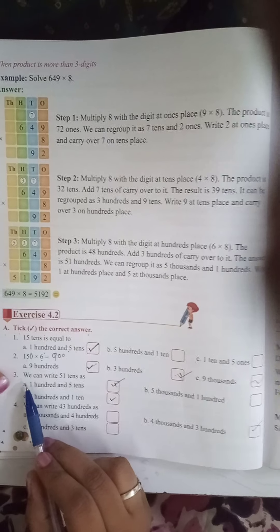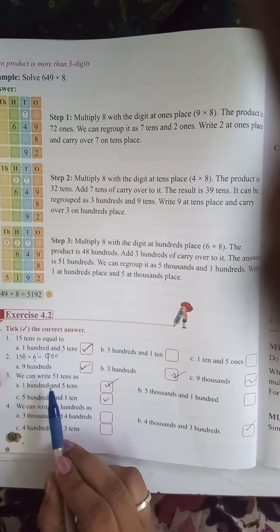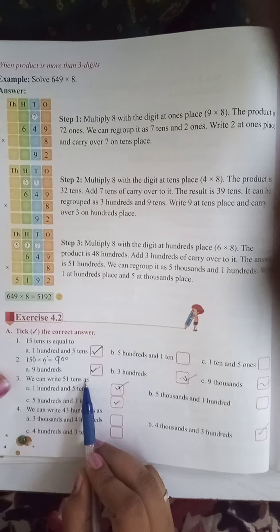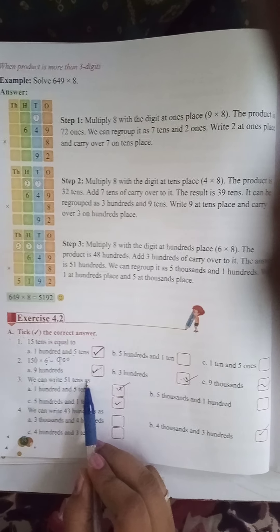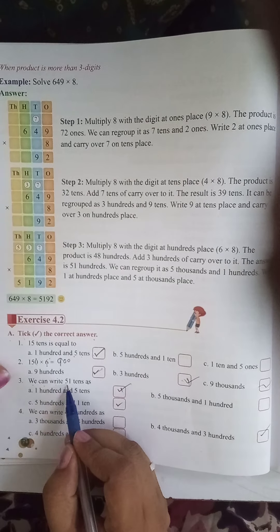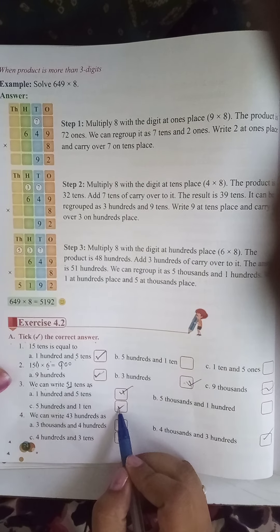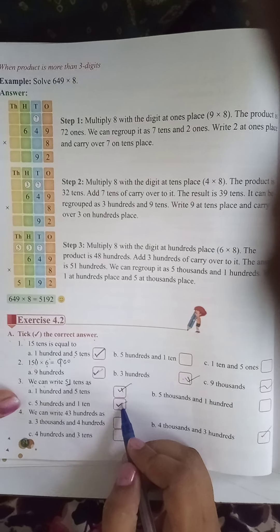Now see the third one is we can write 51 tens as... 51 tens you have to make tens. So 51 tens means 510. You have to tick here, option number C.